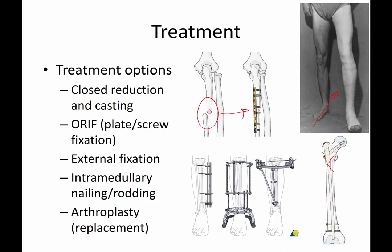You can perform external fixation; there are a few examples of external fixators shown here for a tibia. Here you have a standard monolateral external fixator frame. In this example, you have a circular external fixator, and typically there are transfixion wires that go all the way across, attached to the ring. Here you can see a fixator with pins going into the bone and also transfixion wires.